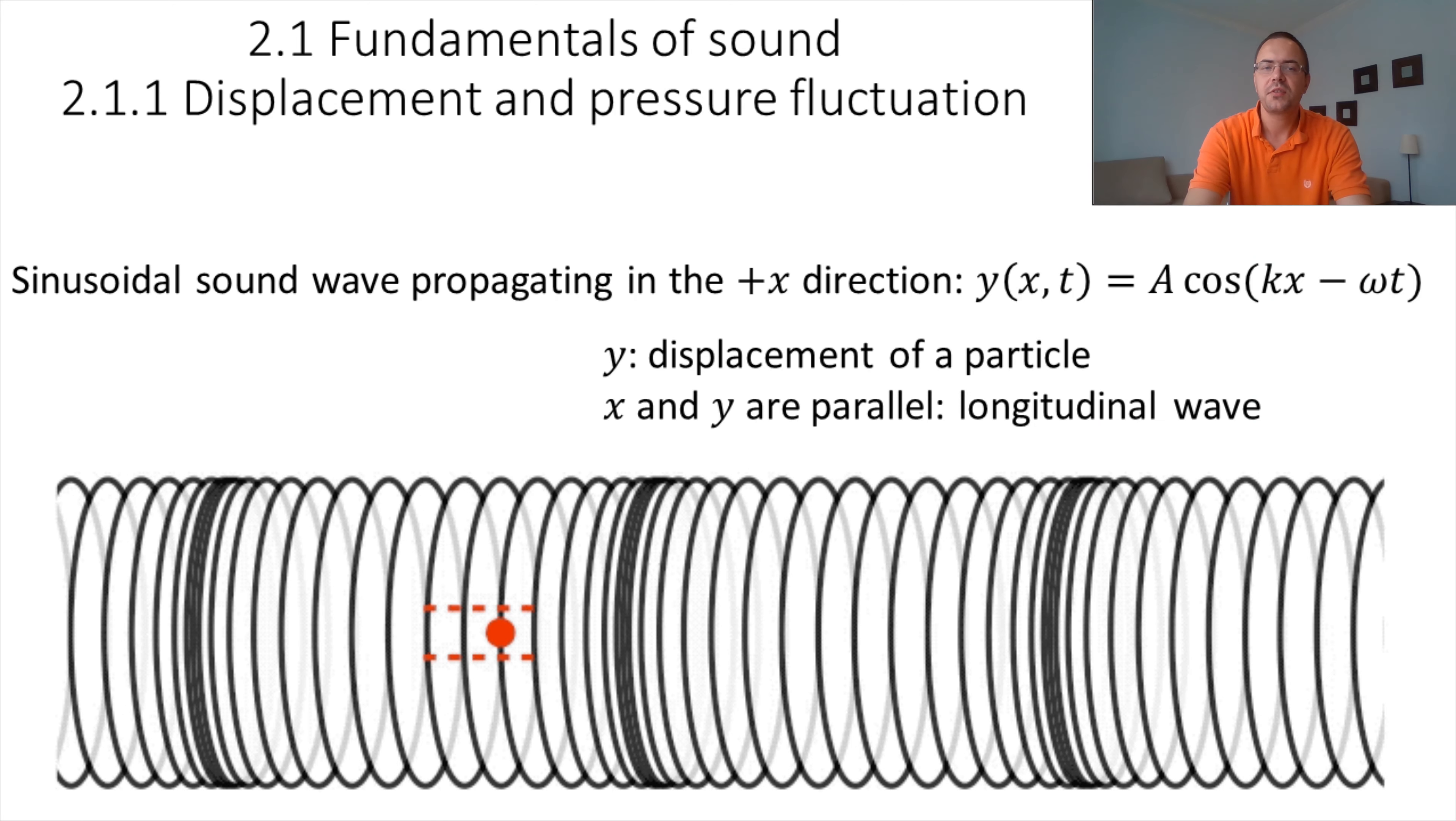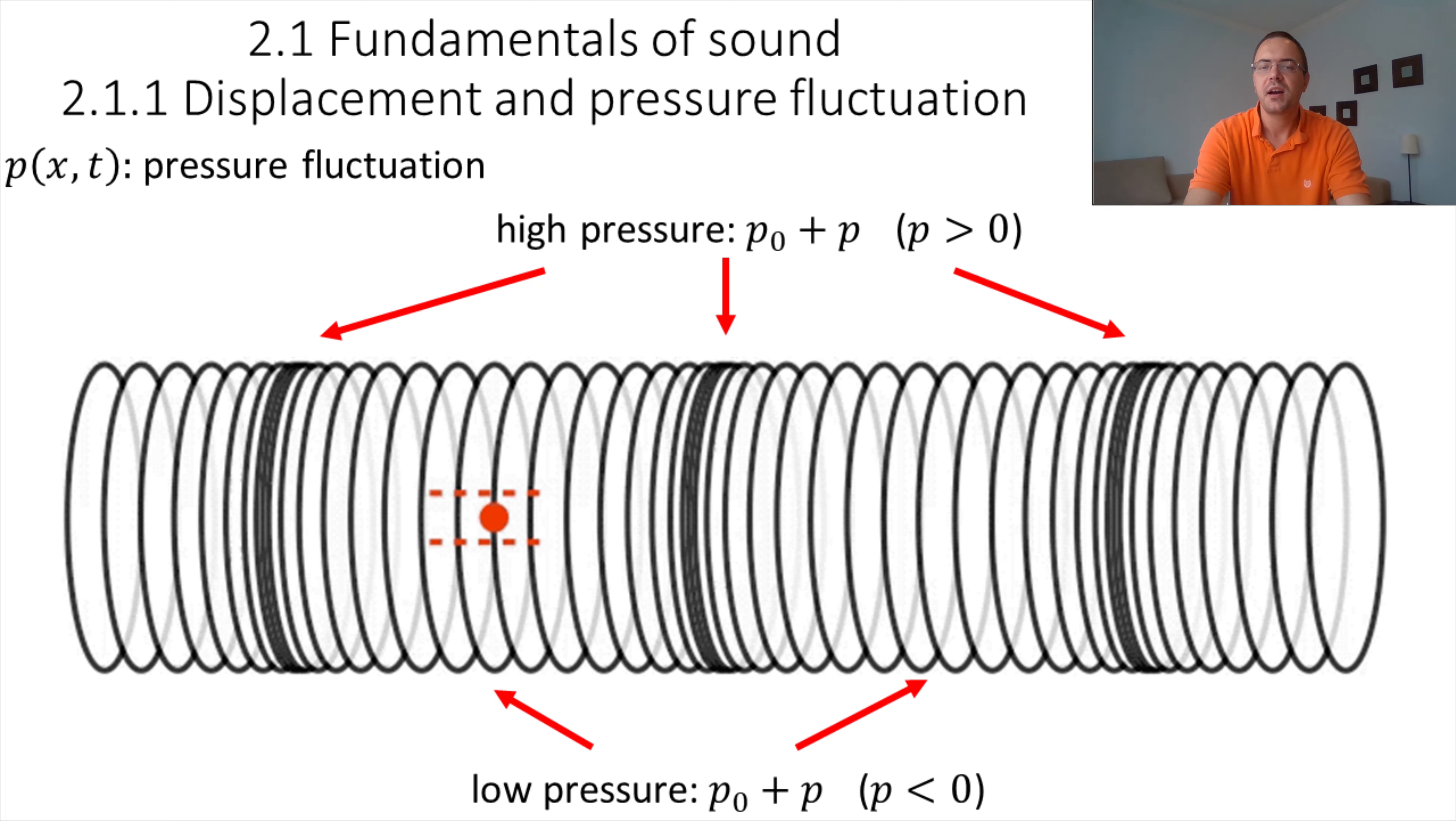Because the particles are displaced, there will be regions that have higher pressure and regions that have lower pressure. And we will write the pressure fluctuation as p, which will be a function of position x and time t. Now, don't confuse the pressure fluctuation with the absolute pressure. The absolute pressure will be equal to the ambient pressure plus the pressure fluctuation. So we have P0, the ambient pressure, plus the pressure fluctuation, small p. And the pressure fluctuation can be positive or negative, but the absolute pressure is always going to be positive.